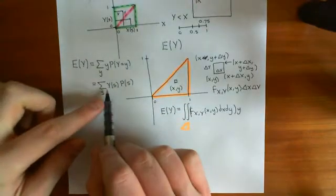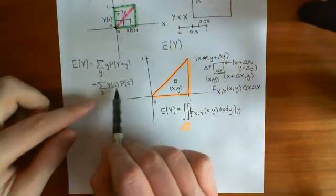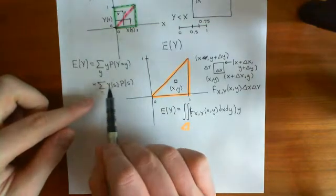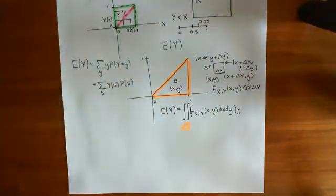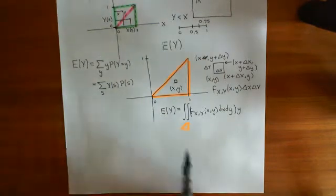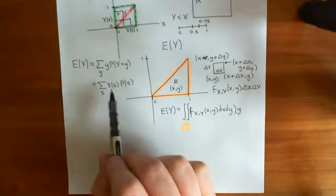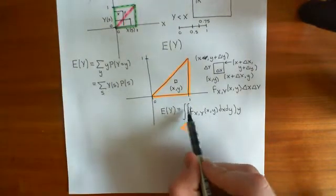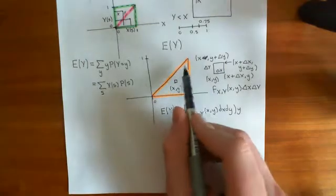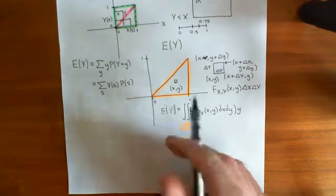So we mean go through all of the values of S, look at its value of Y, times it by the probability of getting that value of S, and sum them all up. That gives you the mean value of Y, which is what we define to be the expected value of Y. My claim is that by performing this integral we are doing that, because this means go through every value of X and Y in this orange triangle, which we've already talked about.